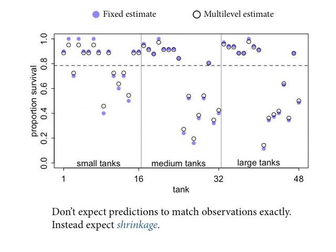There are model types you won't be able to define in map2stan, so at some point you might want to do some raw hacking in Stan — it's not that hard. Here's what happens — this is the slide I ended on last week. Across the horizontal are the different tanks; there are 48 tanks in this dataset. On the vertical I'm showing you the proportion of survival for two different sets of estimates. The blue points are the raw fixed estimates — what you get if you just took the number of surviving tadpoles in each tank and divided it by the density of tadpoles originally alive.